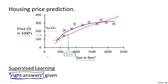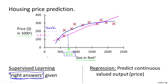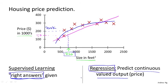This is an example of a supervised learning algorithm. The term supervised learning refers to the fact that we gave the algorithm a data set in which the correct answers were given — for every example we told it the actual price the house sold for, and the task was to produce more of these right answers. This is also called a regression problem, meaning we're trying to predict a continuous-valued output — namely the price.